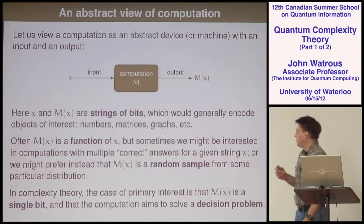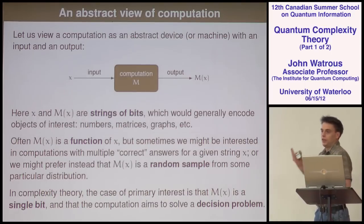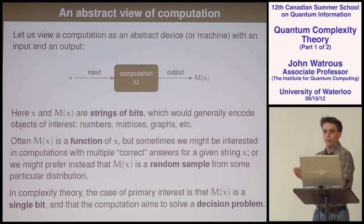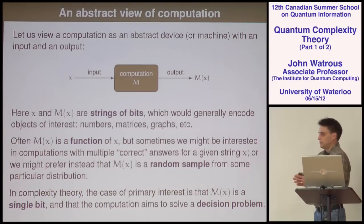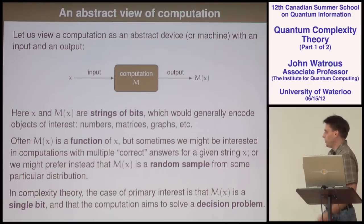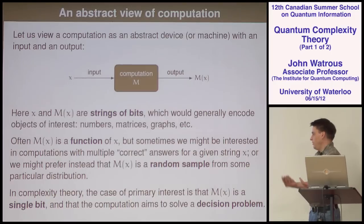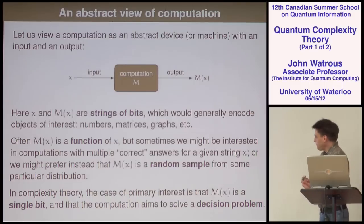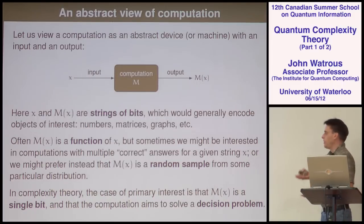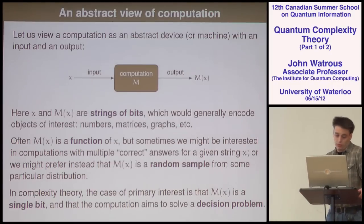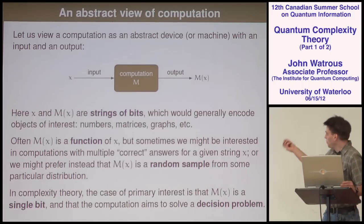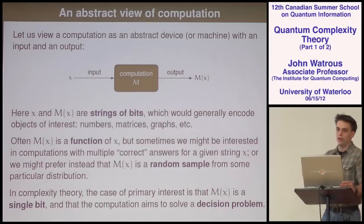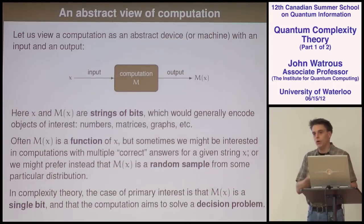The reason for focusing on a single bit of output is not because other possibilities are uninteresting, but it's a helpful way of narrowing down the problem so we can categorize different types of computations. Most of the time when you have some function you care about, you could think about the individual bits of that function as instances where you're getting a single bit. So I'm going to mostly focus on this case, and we'll call these decision problems — the algorithm is making a yes or no decision.